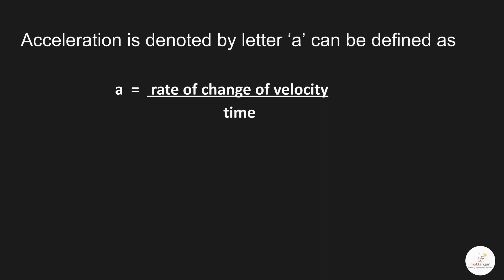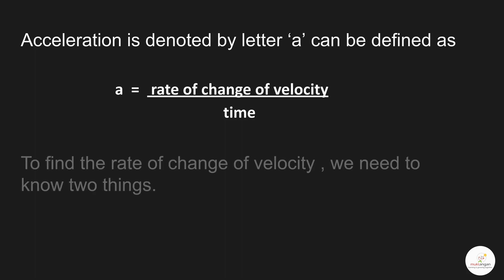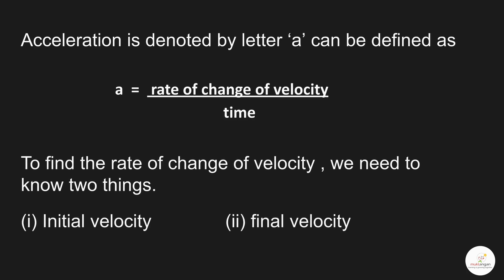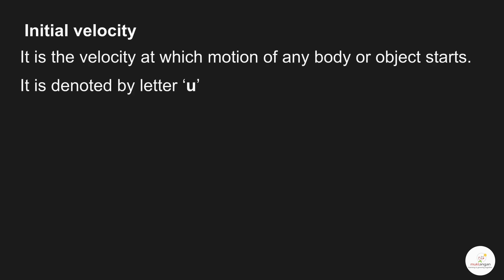The question is: how do we calculate the rate of change of velocity? To find the rate, we need to know two things: initial velocity and final velocity. What is meant by initial velocity? Initial means beginning — it is the velocity at which the motion of any body or object starts. In other words, it is the velocity at time 0. It is denoted by the letter U.